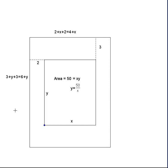Of course, there's not just one side, there's another. So the entire perimeter will end up being twice 4 plus x. That gives you the top and the bottom. And twice 6 plus y, that gives you the left and the right.